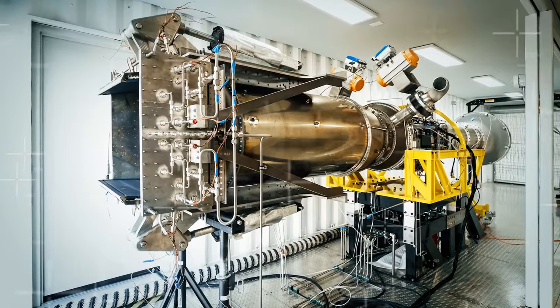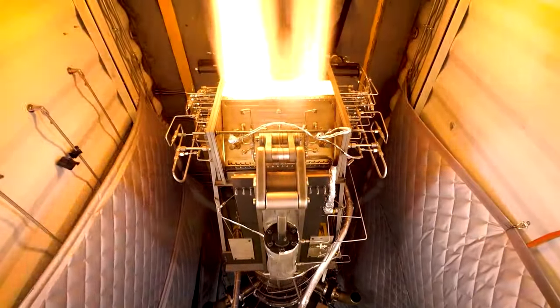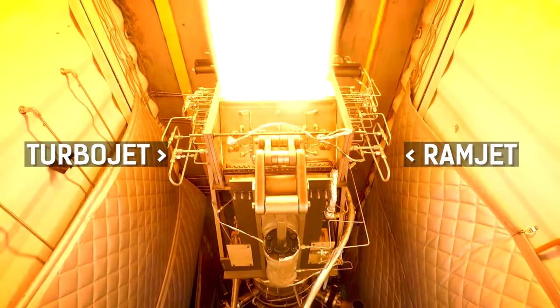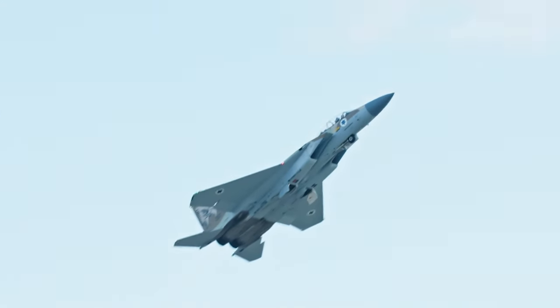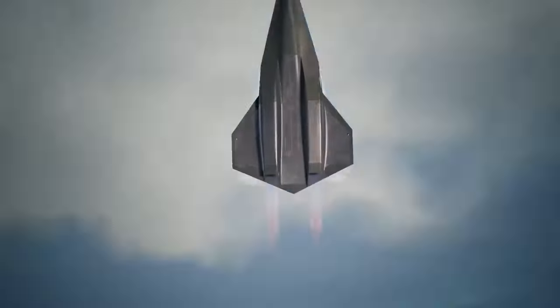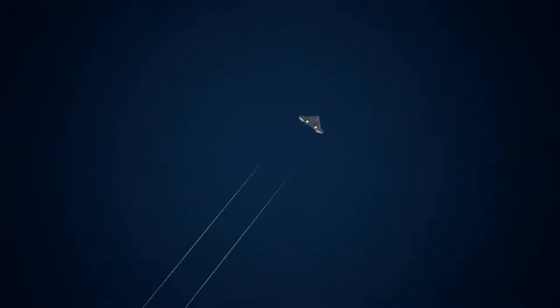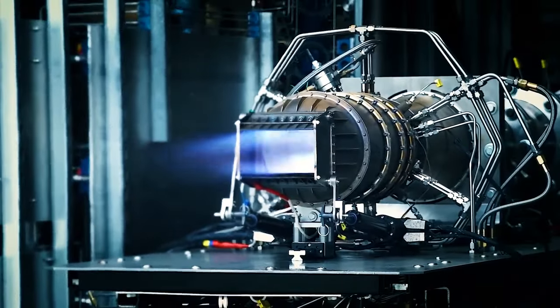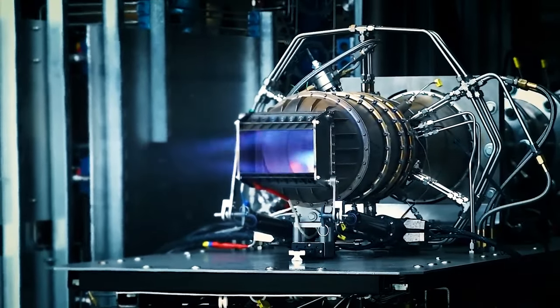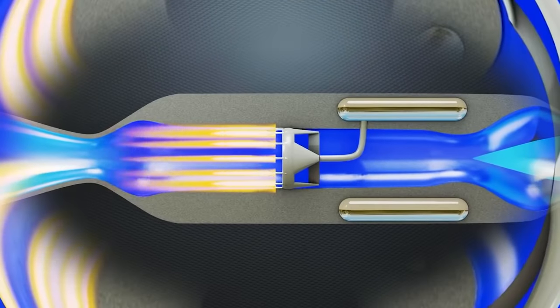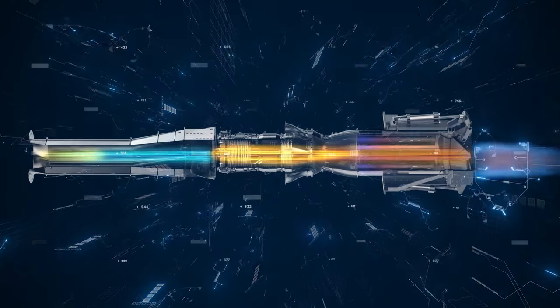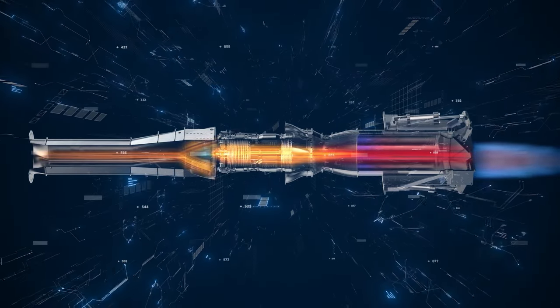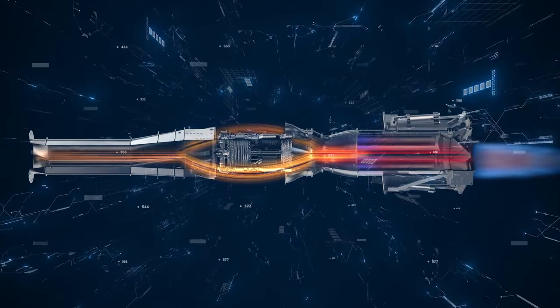That's where the Chimera engine comes in, the brainchild of Hermeus. As we mentioned earlier, it's a hybrid of a turbojet and a ramjet, and it's like having the best of both worlds. During takeoff and acceleration, it's in turbojet mode, just like a regular jet. But once it reaches Mach 2, the ramjet takes over and we're off to the races. And here's the real kicker. The Chimera has a special feature called a pre-cooler, which cools down the air before it enters the engine. This allows Hermeus to push the limits of the turbojet even further before transitioning to the ramjet. It's like pouring ice water on a hot engine. It just works better.